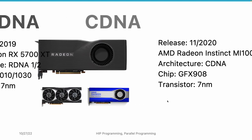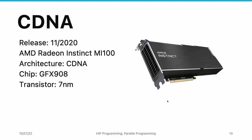On the other side, we have CDNA GPUs, released in November 2020. There is only one CDNA 1 GPU, the MI100. Although the architecture name is CDNA, the chip name shows it is still the 9th major generation — GFX908. So although it was released after the RDNA architecture, it is actually closer to the previous generation Vega GPU. Vega is GFX9.0 and Radeon 7 is GFX906. MI100 is GFX908, also using 7nm technology. The big difference is that the CDNA architecture added the matrix core in the computing units.